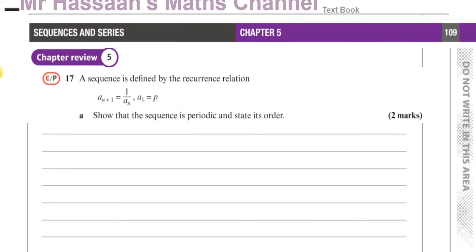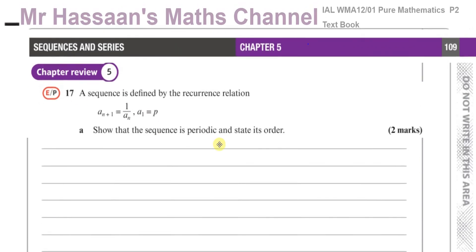This question is about a recurrence relationship, a_{n+1} = 1/a_n, and it told us that the first term a_1 equals p. We've got to show that the sequence is periodic and state its order.